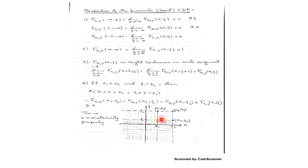Another property — in the univariate case, if x1 < x2 then F(x1) ≤ F(x2), the monotonicity property. We have a similar one here for two variables. Property 4 says: if x1 < x2 and y1 < y2, then the probability that x1 < X ≤ x2 and y1 < Y ≤ y2 can be computed using the joint CDF.